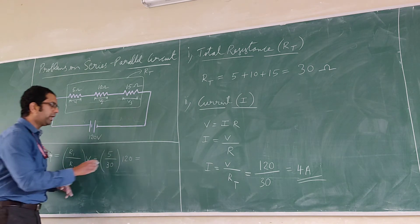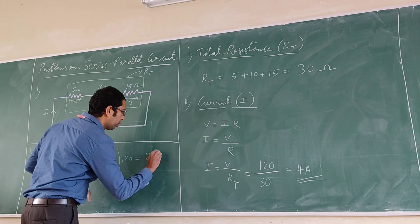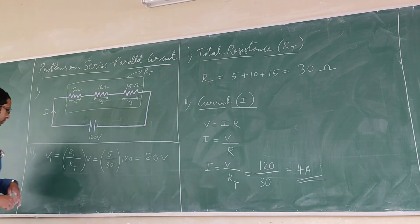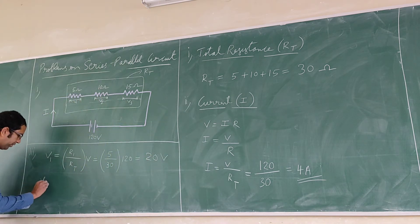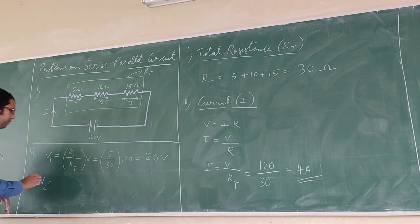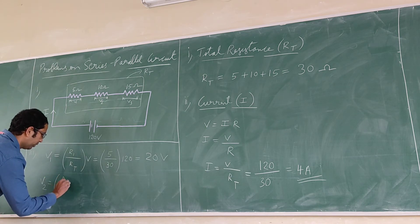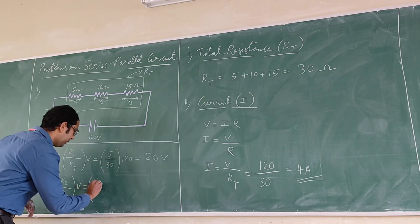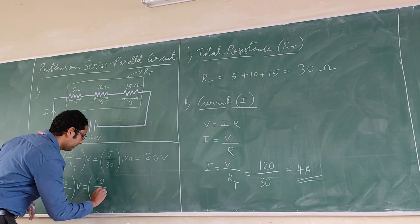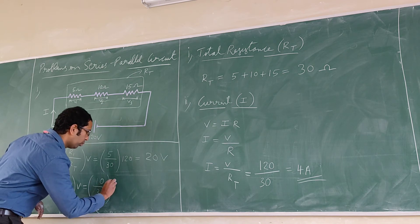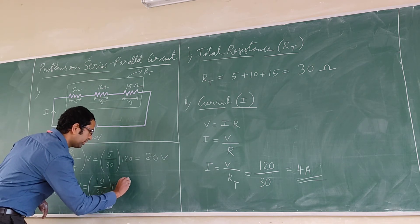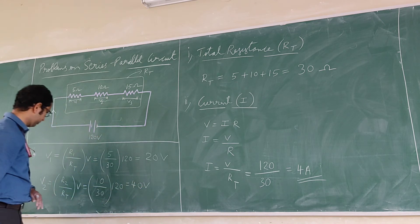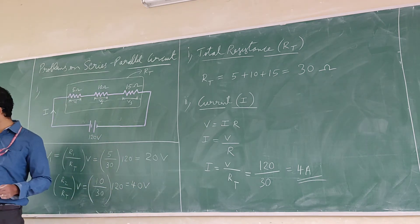Now V2. V2 is equal to R2 divided by Rt into V. That is 10 by 30 into 120, which is 40 volts.